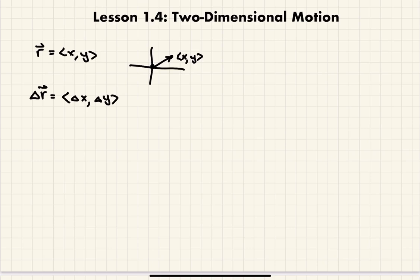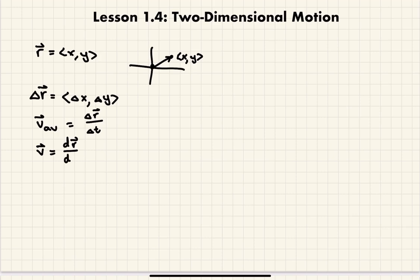We also have velocity vectors. The average velocity vector represents average velocity — you take the displacement vector and divide it by the time interval. The instantaneous velocity vector is just the derivative of position with respect to time. For example, if your position vector is (2t, t²), your velocity vector would be the derivative of each component: derivative of 2t is 2, and derivative of t² is 2t.